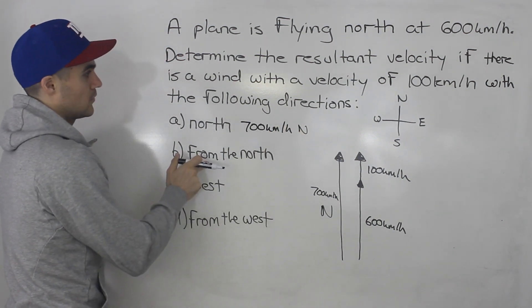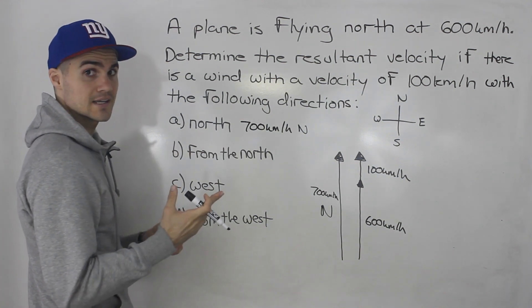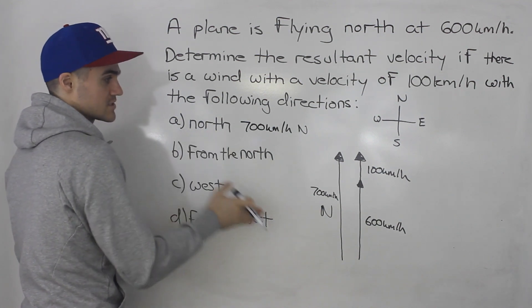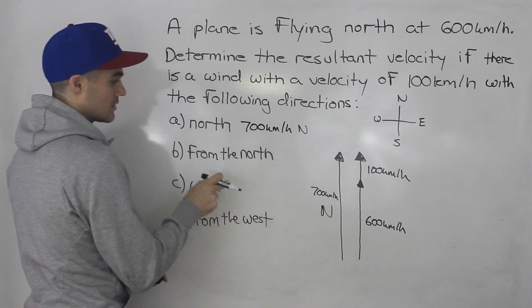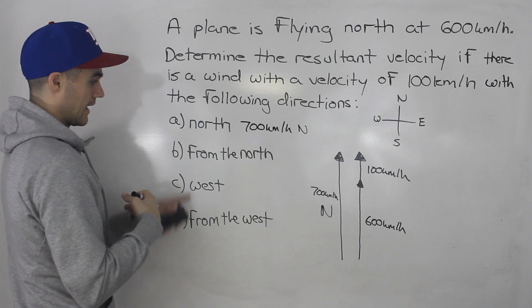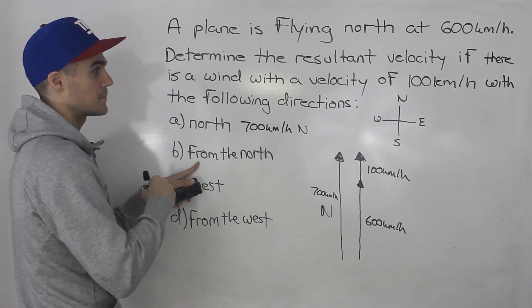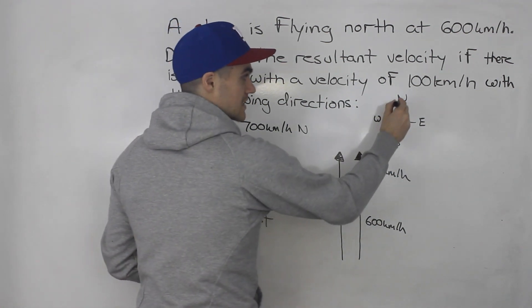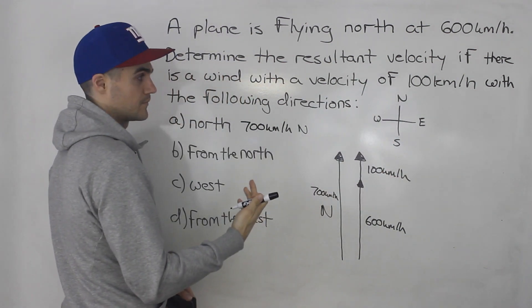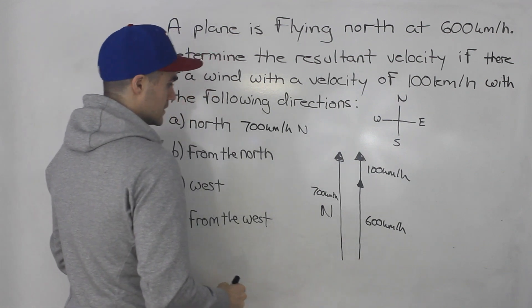Now, what about part B? What if the wind is coming from the north? That's one thing you have to start realizing in these questions. Sometimes they'll give you the direction the wind is going, like in part A it's going north. But sometimes they'll say it's coming from a certain direction — and whenever you see that, it just means it's going in the exact opposite direction. So if the wind is coming from the north, it really means the wind is going south.